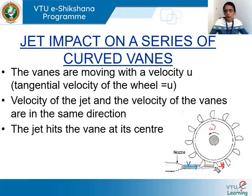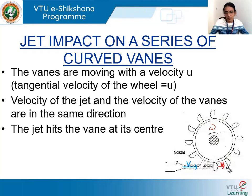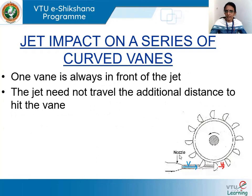The series of curved vanes mounted on the wheel rotate with angular velocity ω. The tangential component of the wheel's velocity is u, and since it is in the horizontal direction, u and the jet velocity v are in the same direction. This reduces to a case where a jet hits a vane at its center with the jet velocity and the tangential vane velocity in the same direction. However, unlike a single moving vane, the jet need not travel additional distance — there is always a vane in front of the jet.